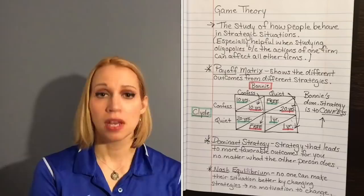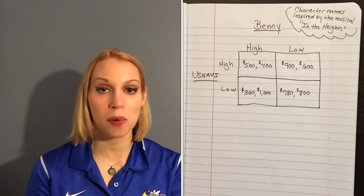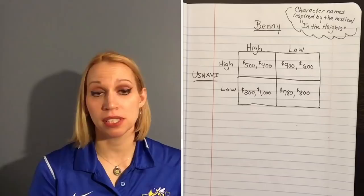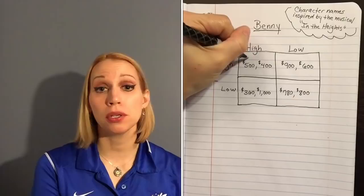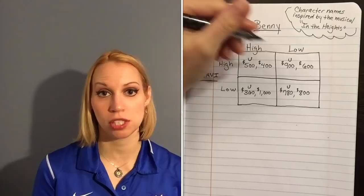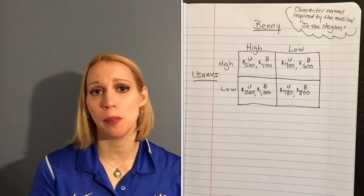Suppose we have two guys who own stores on the same street — Benny and Usnavi. Benny can decide to charge high or low prices, and Usnavi can also choose a high or low price level. In this payoff matrix, Usnavi's daily profits are listed first in each square — you can label them with a U to keep track — and Benny's daily profits are the second entries, which you can label with a B.